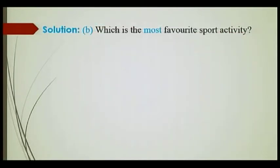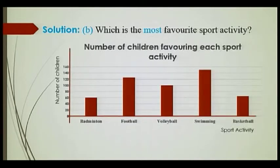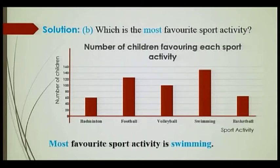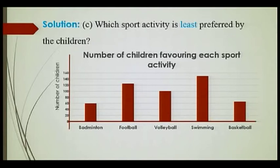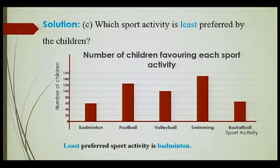For part B — which is the most favorite sport activity? Looking at the bar chart, swimming has the highest bar, so the most favorite activity is swimming. For part C — which sport is least preferred by the children? From the bar chart, the rectangle having the smallest height is badminton. So, badminton is the least preferred sport activity.